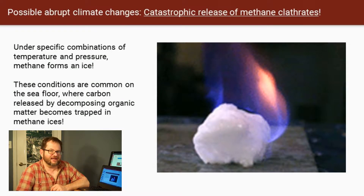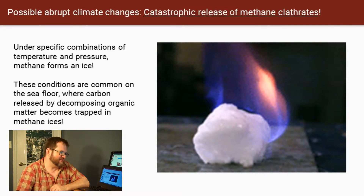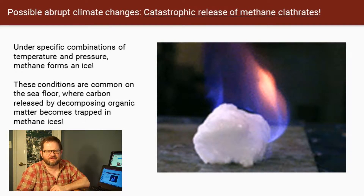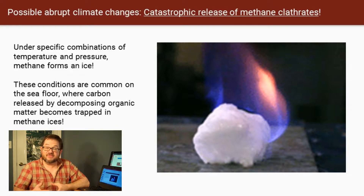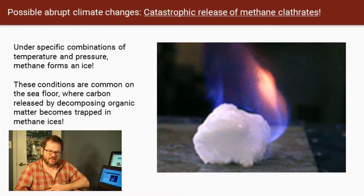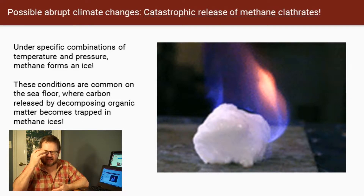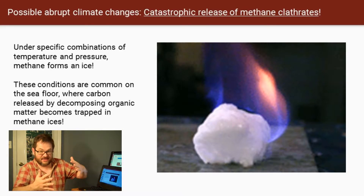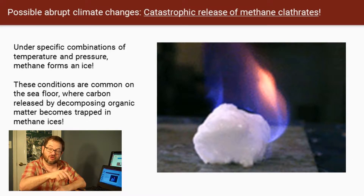Here's another really spectacular way that climate could go horribly wrong, especially in the distant future: the catastrophic release of methane clathrates. This is a word you might not be familiar with — more commonly people refer to this as methane ice. We think of methane as a gas, like natural gas you might use in your stove. But under certain combinations of low temperature — near zero Celsius — and high pressure, methane actually exists in the form of an ice. It's a solid. It's a flammable solid that looks like ice but burns.